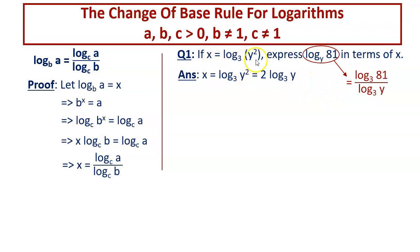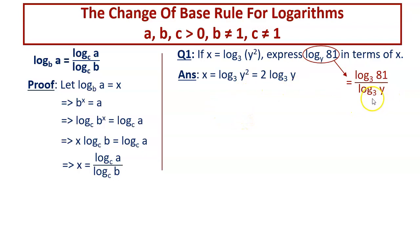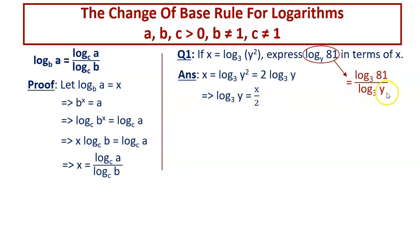X is equal to log of Y² to the base 3, so 2 can be brought down: it is equal to 2 times log of Y to the base 3, which equals X. We need the value of log of Y to the base 3 because we cannot keep Y in this term — we need X. So log of Y to the base 3 is X over 2. In place of log of Y to the base 3 we can write X over 2.